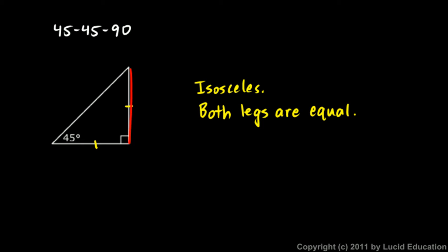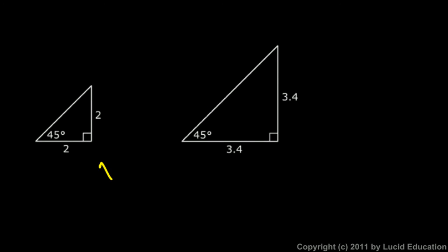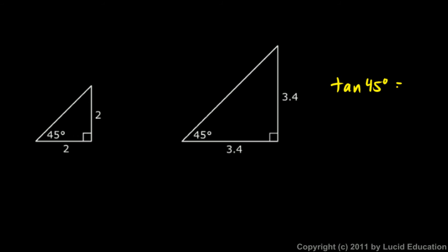From this it's easy to see the tangent ratio: if both legs are the same, then the tangent of that 45-degree angle is 1, because the opposite and the adjacent will be equal. For example, with legs of length 2, tangent = 2/2 = 1. With legs of 3.4, tangent = 3.4/3.4 = 1. So for any triangle with a 45-degree angle, the tangent of 45 degrees equals 1.